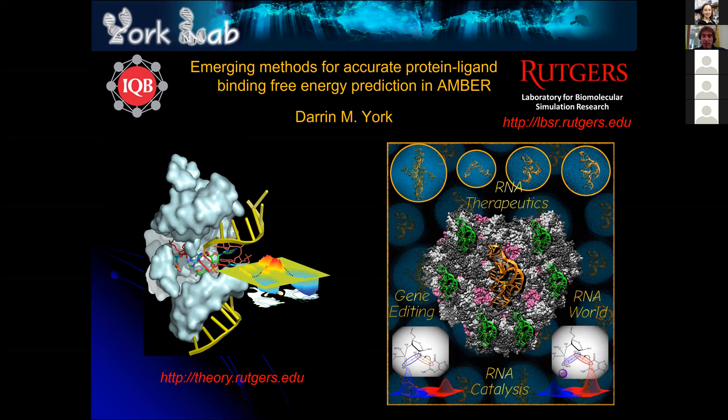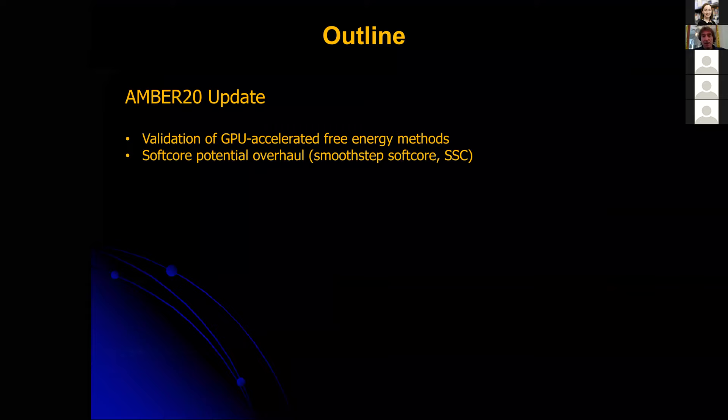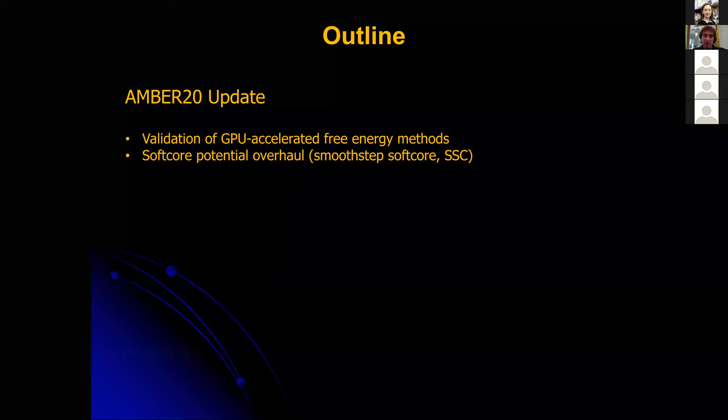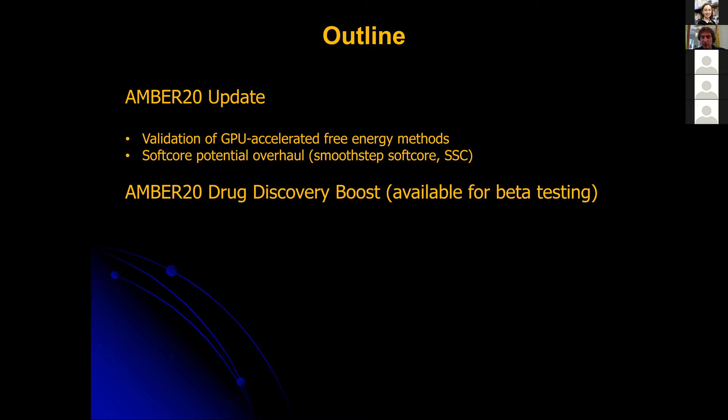I wanted to divide this up into a couple pieces. One, to give a quick update on what's going on in AMBER 20 in terms of validation of our GPU-accelerated free energy methods and some recent overhauling of soft core potentials that we've done to improve some of the alchemical transformations.